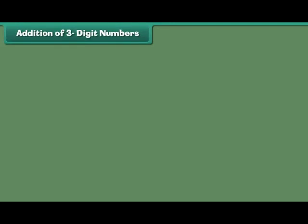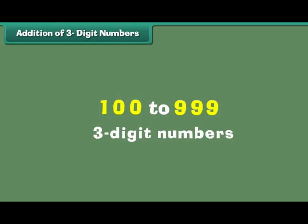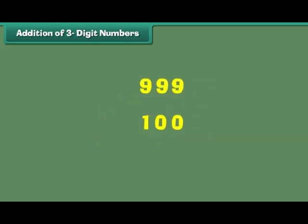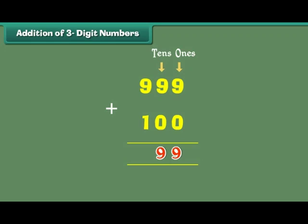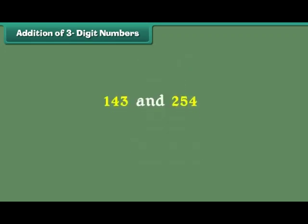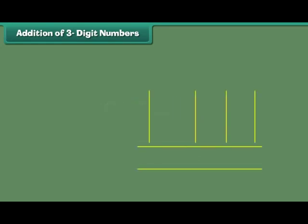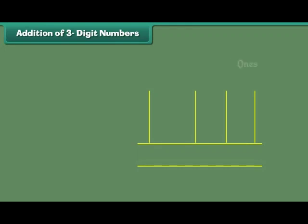Addition of 3 digit numbers. The numbers from 100 to 999 are called 3 digit numbers. In order to add two 3-digit numbers, we first add the digits at the 1s place, then the digits at the 10s place, and finally the digits at the 100s place. Let us add 143 and 254. The digits at the 1s place are 3 and 4. 3 plus 4 is equal to 7.